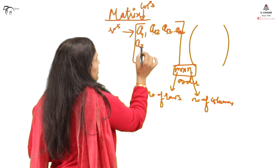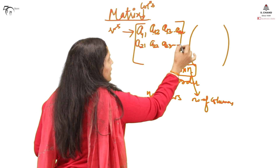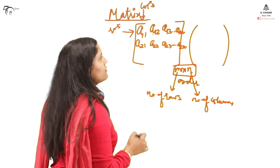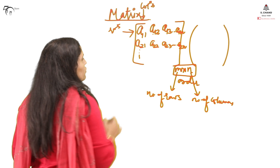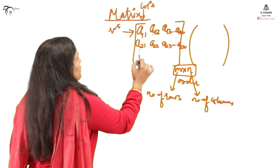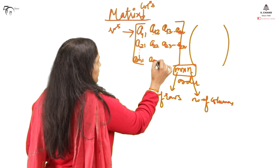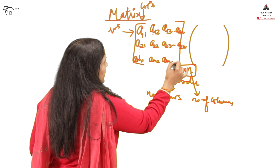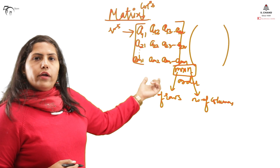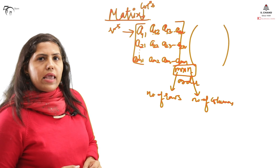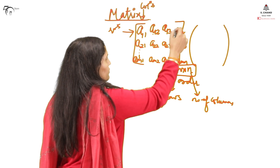Then comes the second row: second row first element, second row second element, second row third element, continuing up to the second row nth column. We keep writing all rows this way — we have m rows in total. So the last row starts at aₘ₁, then aₘ₂, aₘ₃, and the last element will be aₘₙ. The last element corresponds to the product of the order m × n, and this is the standard notation for writing matrix elements in square or round brackets.